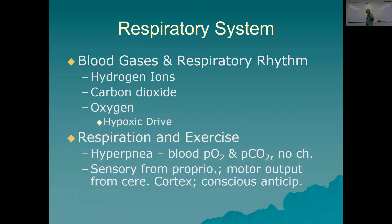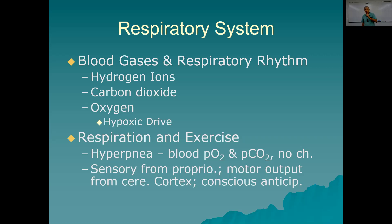Gas exchange and respiratory rhythm — it's important to realize that respiratory rhythm, how often you're breathing, is dependent upon hydrogen ions. pH drives how often you breathe, not oxygen. The carbon dioxide concentration of your blood has much greater control over how often you breathe than oxygen, because it's linked to hydrogen ions in the ubiquitous equation. Oxygen levels have almost nothing to do with it.